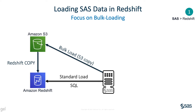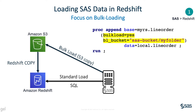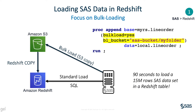To use bulk load from SAS, simply add BULKLOAD=YES and BL_BUCKET equal to the S3 bucket and path you want to use as a staging area. The bulk load process requires the AWS keys to be properly set up on the SAS server. Bulk loading can load a 15 million record SAS dataset into Redshift in 90 seconds, instead of 16 minutes with an optimized SQL inserts method.